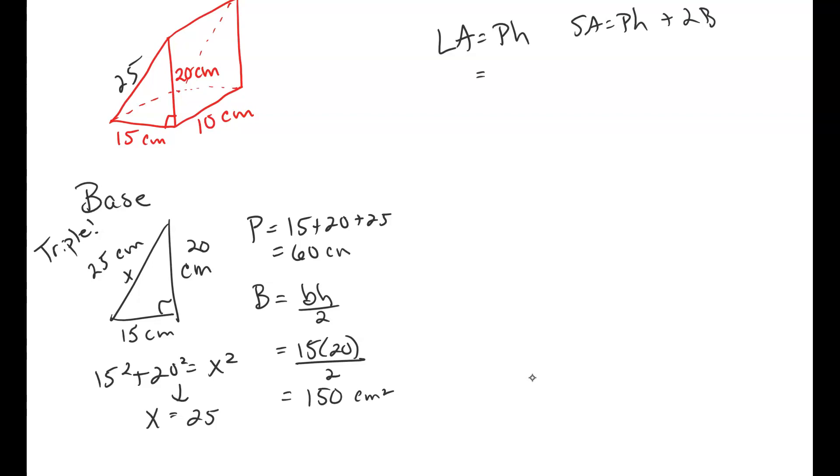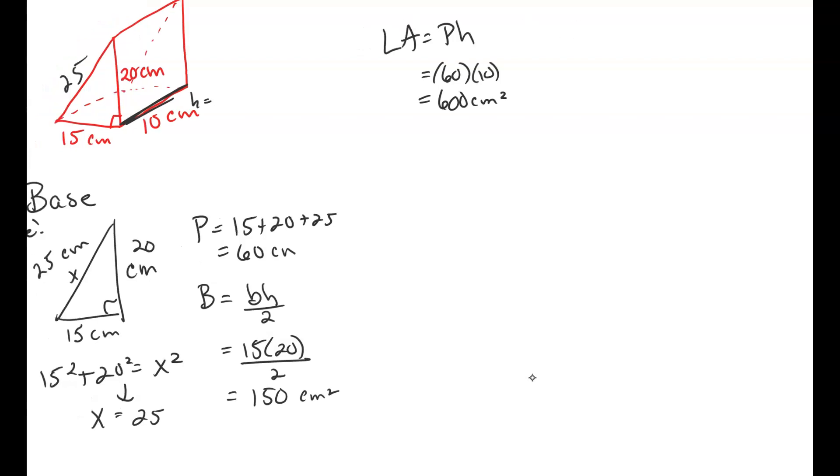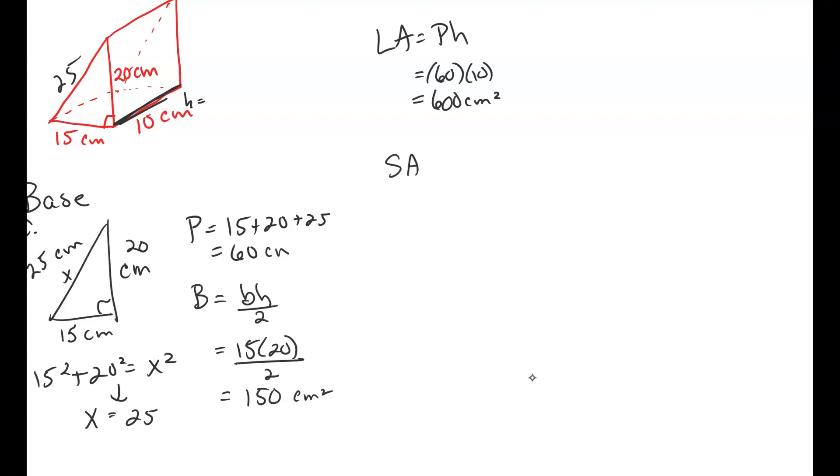Perimeter centimeters, and now we just plug in the values. So lateral area, it's the perimeter of the base, which is 60. The height of the prism, which is going to be 10, and that gives us 600 square centimeters. Now our surface area, I'm just going to write it over a little bit more. Oh, actually, we could just write below, so it's a little less space here.